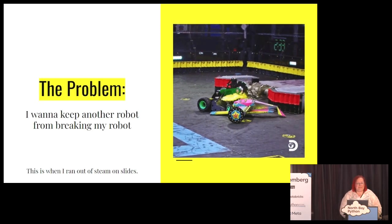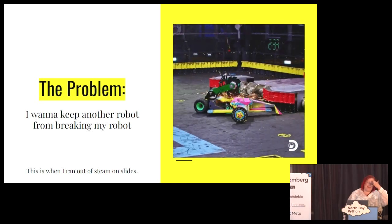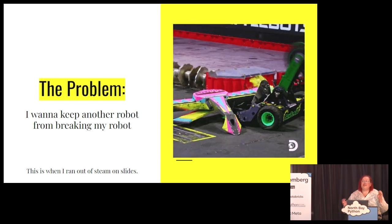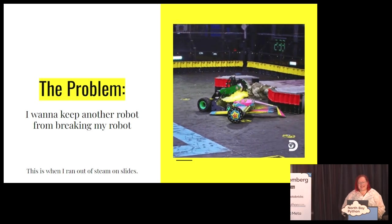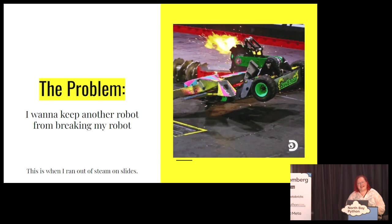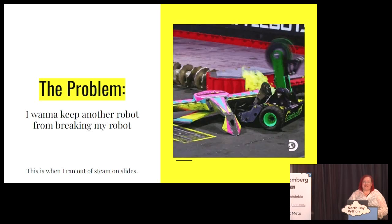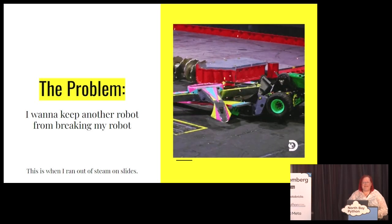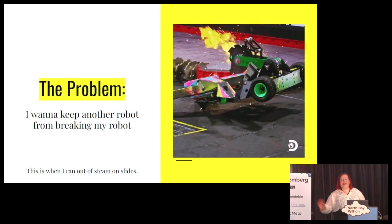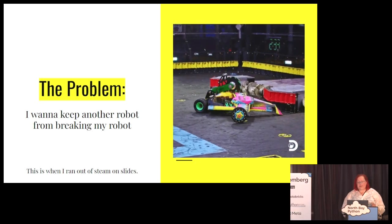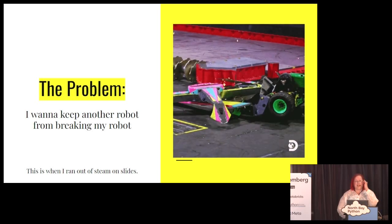So, here's the problem space. Of course, I want to keep another robot from breaking my robot. And again, this is where I ran out of steam on slides because there's just too many failures to look into, and it's really cool. So, that is our robot, Hijinx, the very pretty one that's pink and blue and yellow. And that other robot is Sawblaze, the current world champion, destroying us. We went the full three minutes, but we lost a lot of parts and at one point had our drive motor just flopping around in front of the robot. So, we have had to learn a lot about how we make our robot stronger and how we adapt to failures.